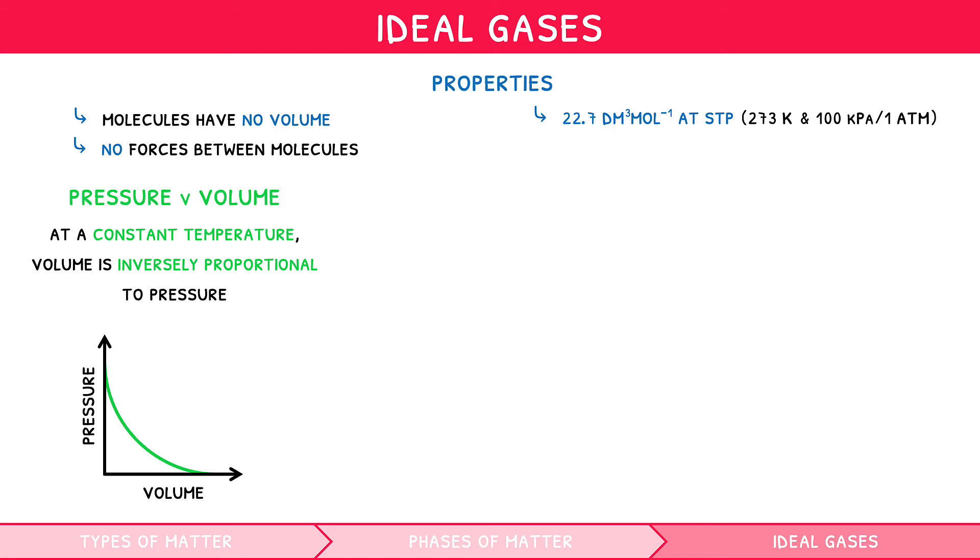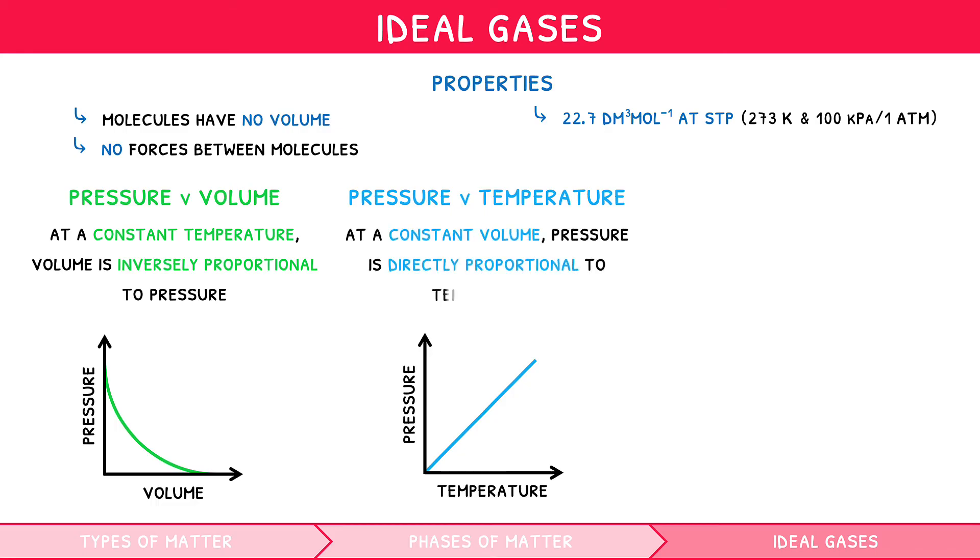The second relationship is pressure versus temperature. A fixed mass of an ideal gas at constant volume has a pressure directly proportional to its absolute temperature, i.e. as temperature increases, pressure will also increase. This is because as temperature increases, kinetic energy increases. Volume therefore increases to keep the pressure constant.